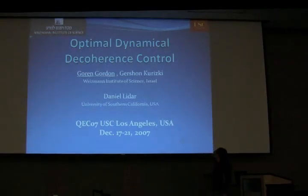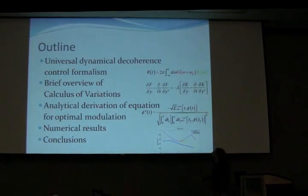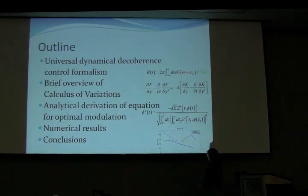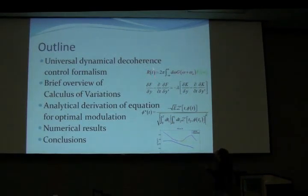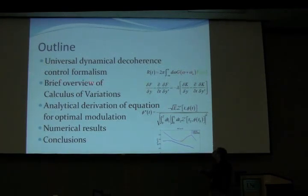This is joint work with Gershon Kuritsky and Daniel Idar. I will start by introducing the universal dynamical decoherence control formalism, which results in a universal formula for the decoherence rate — which is the spectral overlap of the noise and the modulation.